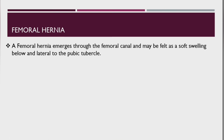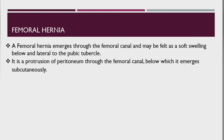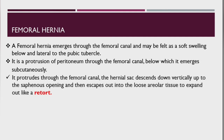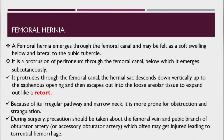A femoral hernia passes through the femoral canal and may be felt as a soft swelling below and lateral to the pubic tubercle. It is a protrusion of peritoneum through the femoral canal, below which it emerges subcutaneously. The hernial sac descends vertically to the saphenous opening where it escapes into the loose areolar tissue and expands like a retort. Because of its irregular pathway and narrow neck, it is more prone to obstruction and strangulation. During surgery, precaution should be taken regarding the femoral vein and the pubic branch of the obturator or accessory obturator artery, which may get injured leading to torrential hemorrhage.